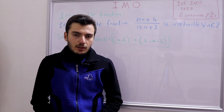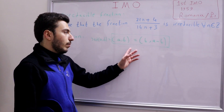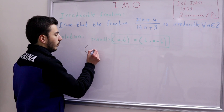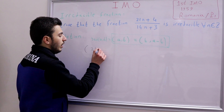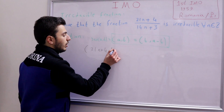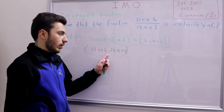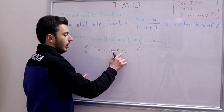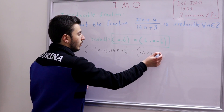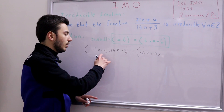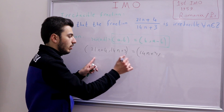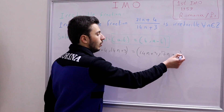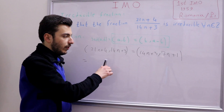Things are simpler than they seem. Let's apply the property directly: GCD(21n+4, 14n+3). First step: take 14n+3 first, then subtract to get 21n+4 − (14n+3) = 7n+1. So we have GCD(14n+3, 7n+1).